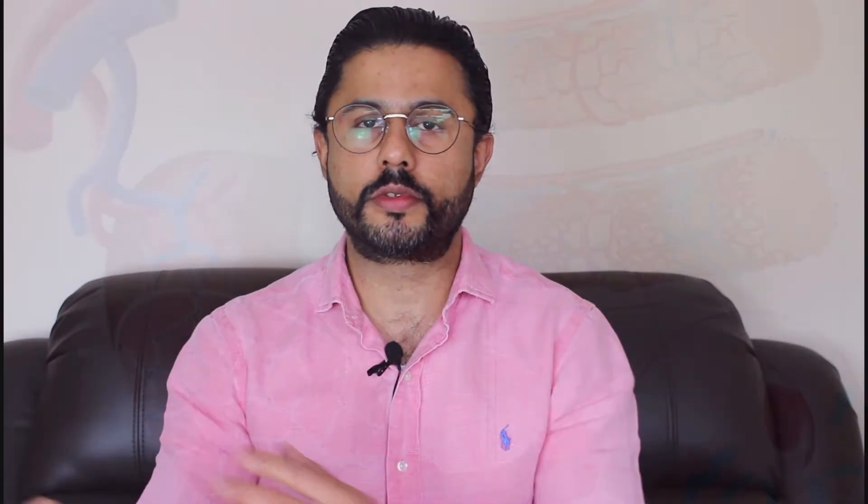These same changes also happen in our skeletal muscles. When we start doing aerobic exercise, the working muscles have greater blood flow requirements because they need more oxygen and nutrients. We get better dilation or widening of the blood vessels and an increase in their number, which increases blood flow to the tissue.